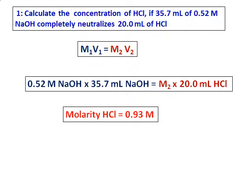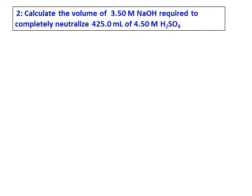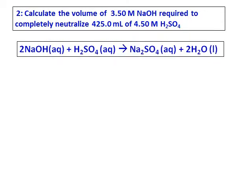Calculate the volume of 3.50 molar sodium hydroxide required to completely neutralize 425.0 milliliters of 4.50 molar sulfuric acid. Start the reaction by writing the neutralization reaction between sodium hydroxide and sulfuric acid. And before you start doing the question, remember to balance it.